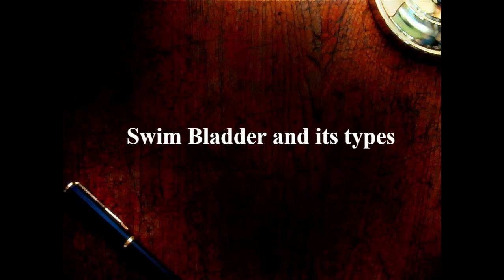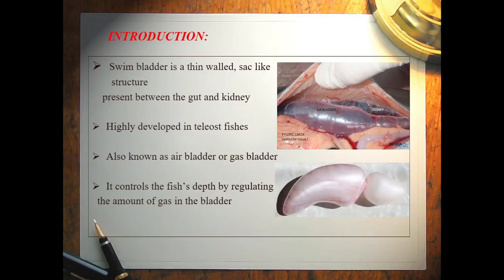Hello everyone, today I want to share some knowledge about the swim bladder and its types. The swim bladder is a thin-walled sac-like structure present between the gut and the kidney. It is highly developed in teleost fishes and is also known as air bladder or gas bladder.